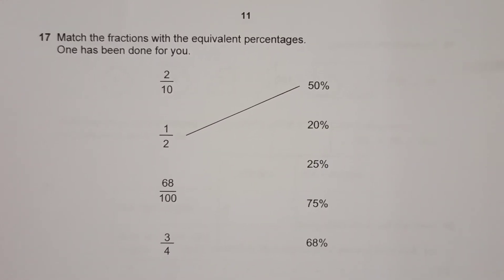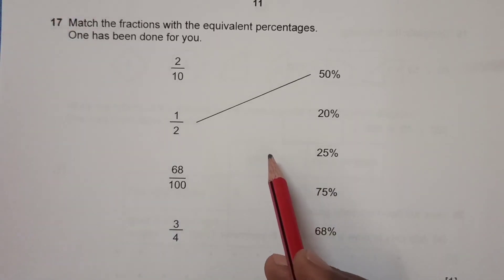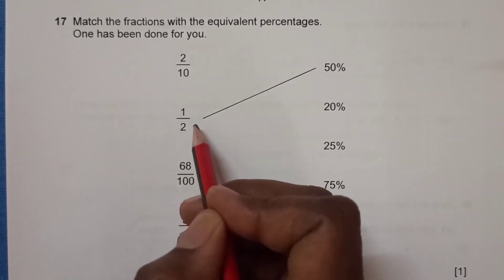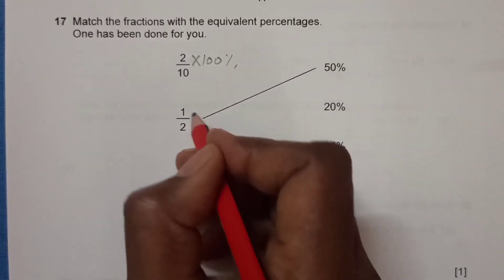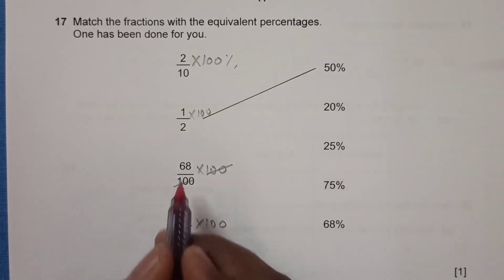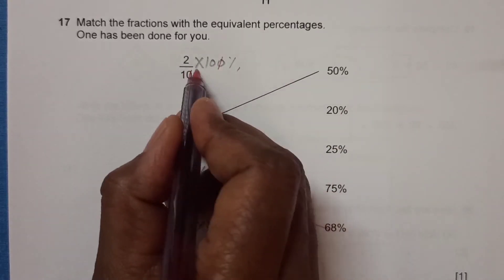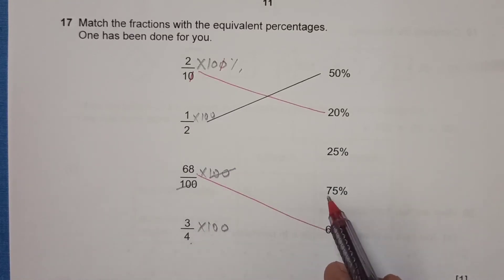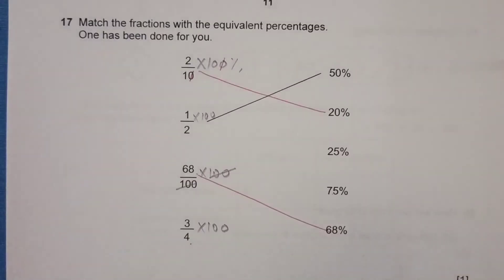Number 17: match the fractions with the equivalent percentages — one has been done for you. To convert a fraction to a percentage, multiply by 100. For 68/100, the 100s cancel and you get 68%. For 2/10, multiplying by 100 gives 20%. For 3/4, using a calculator: 3 times 100 divided by 4 equals 75%. So we match each fraction to its corresponding percentage.